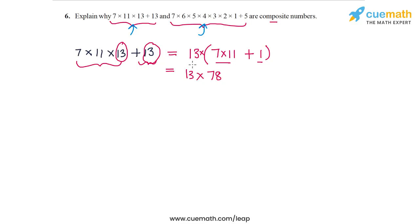So now we can immediately conclude that this first number is composite, since it's a product of two smaller numbers, 13 and 78. So that solves the first number.